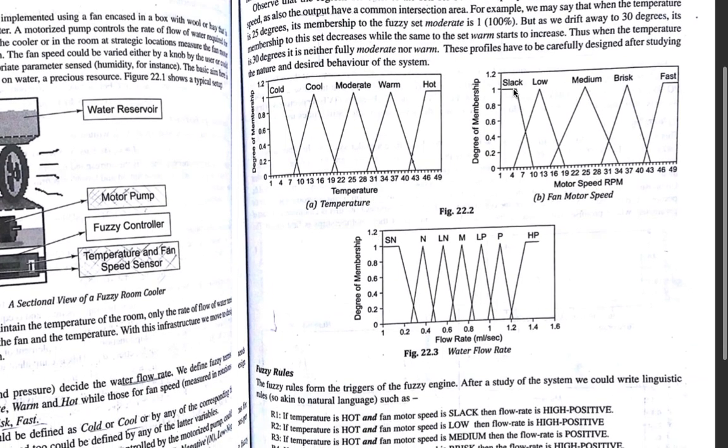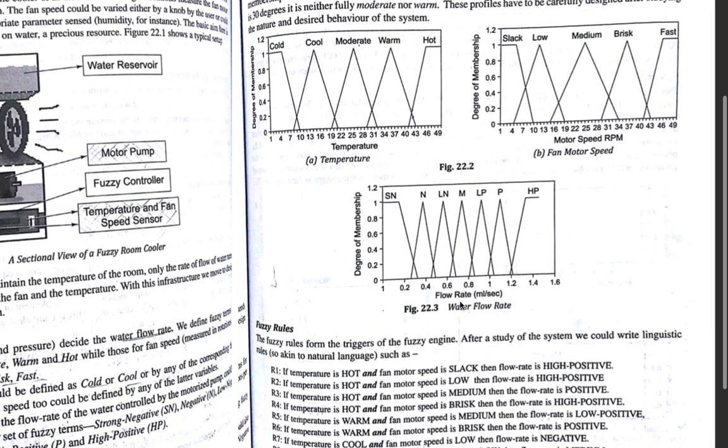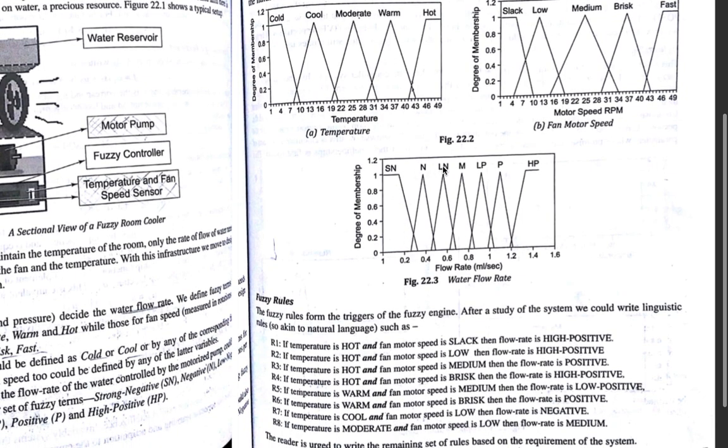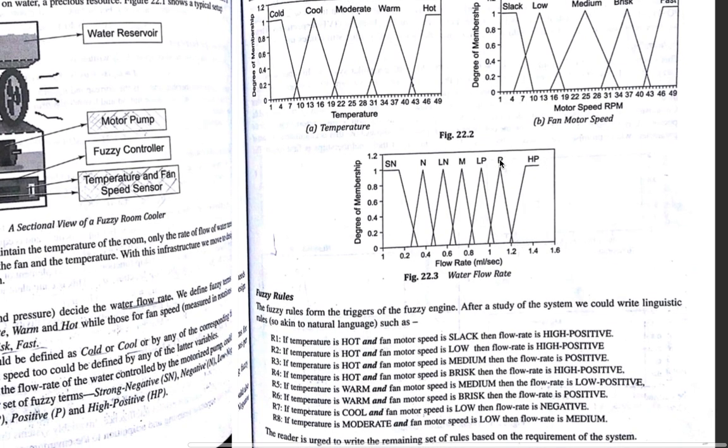Motor speed is divided into linguistic terms: slack, low, medium, brisk, fast. And flow rate would be, if flow rate is 0.2, then SN, N, LN, moderate, LP, P, HP. High positive, positive. LP means low positive, positive, negation, medium.